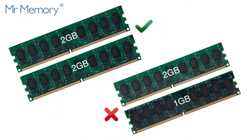For dual channel mode to function, the memory should be installed in pairs of two identical modules, otherwise known as a matched pair. For example, two times one gigabyte or two times two gigabyte.